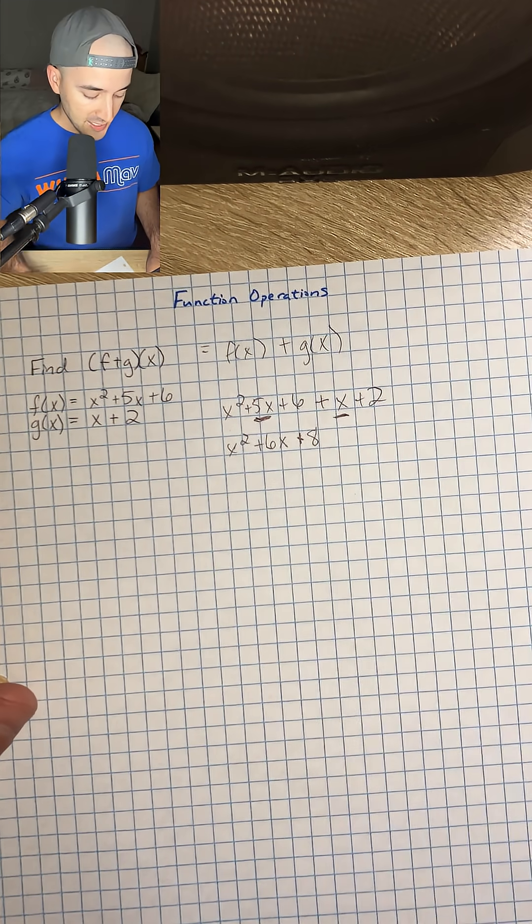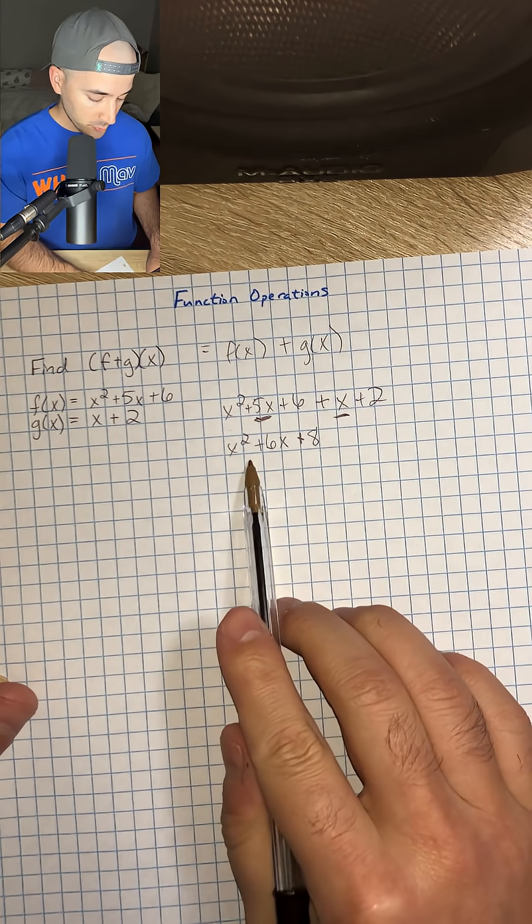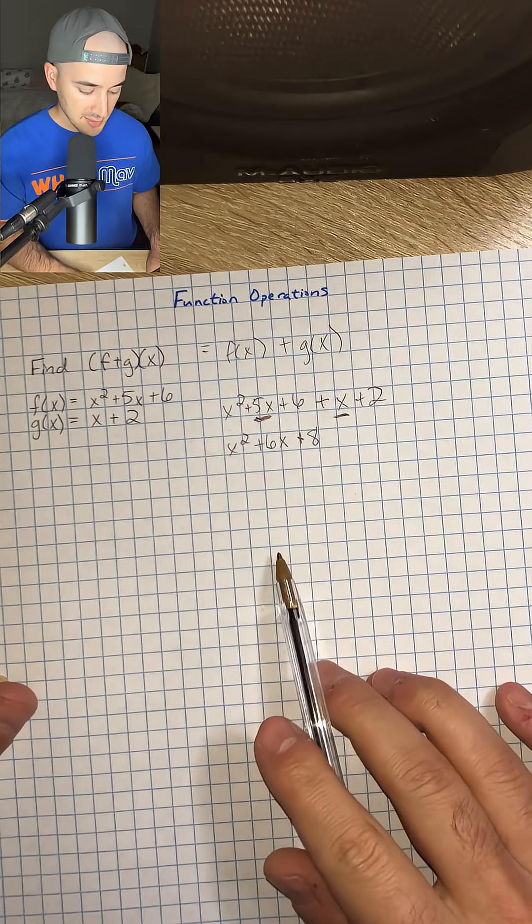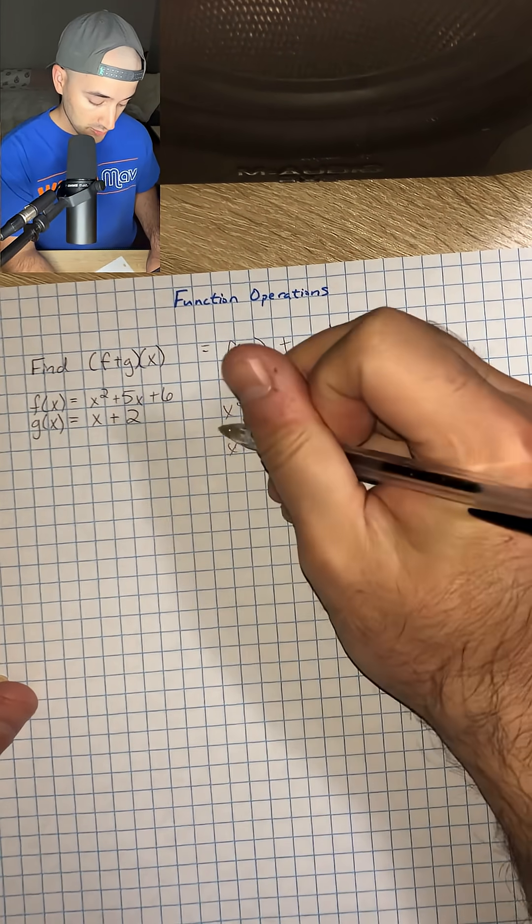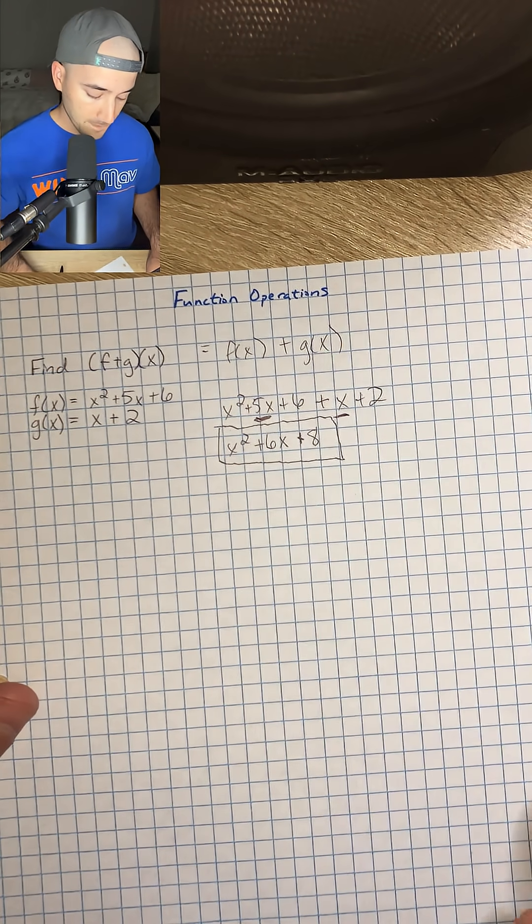We'll have plus 8. Now that we've added both of those functions and combined like terms, that is all we have to do. That would be our answer.